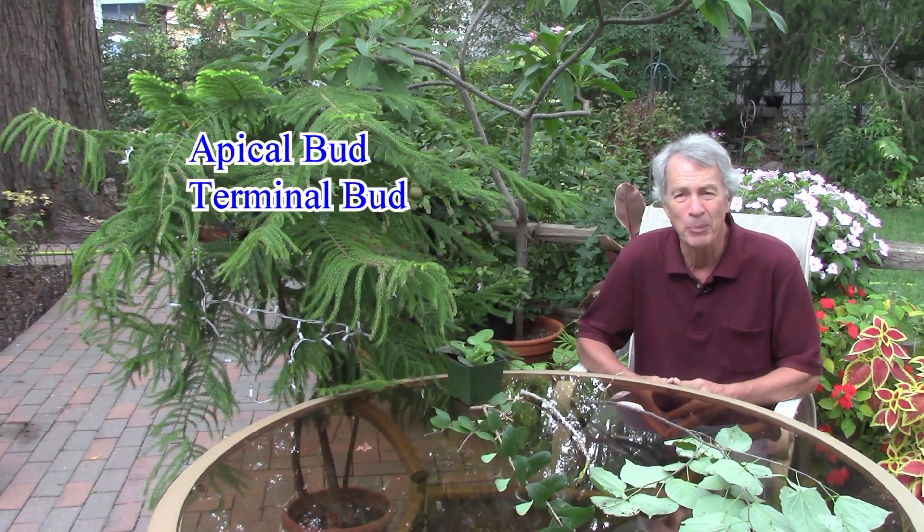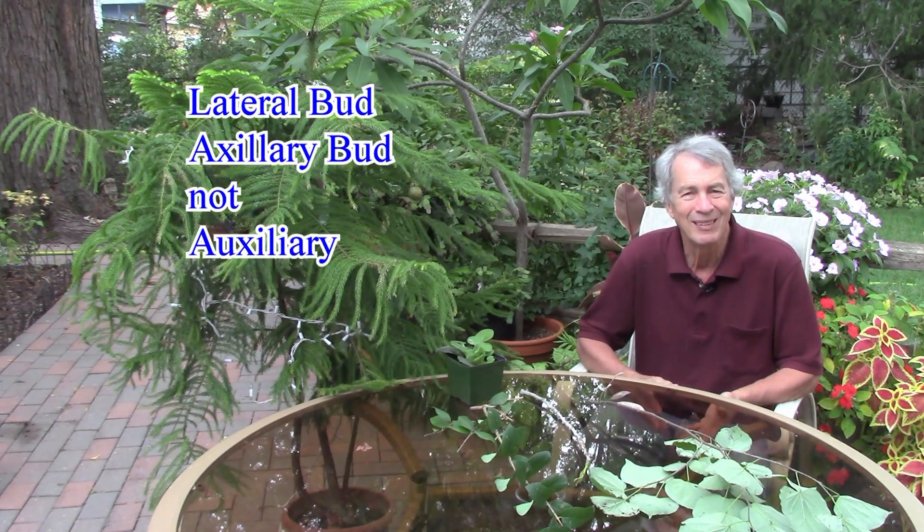The bud at the end of a stem is called the apical or terminal bud. Buds along the sides of a stem are called lateral or axillary buds.